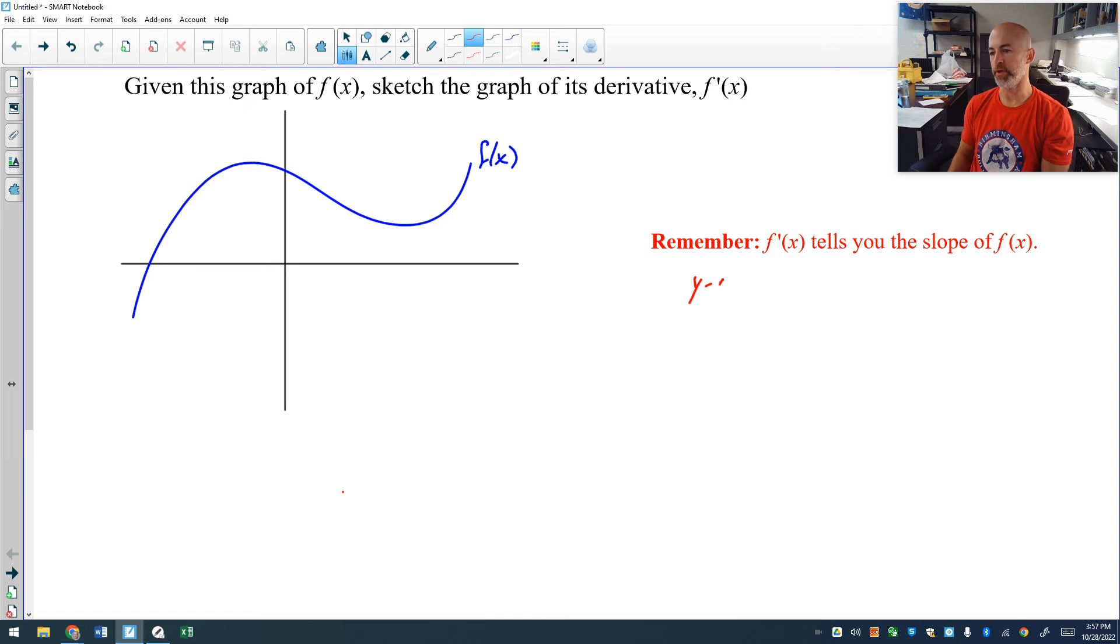Which means the y-coordinates of f prime represent the slope of f at that x-coordinate.